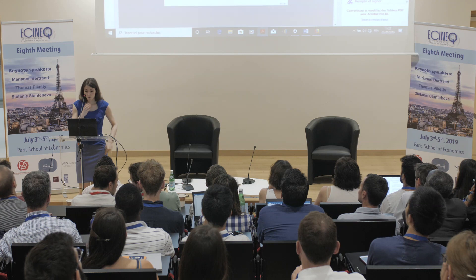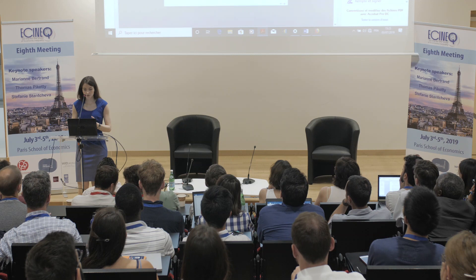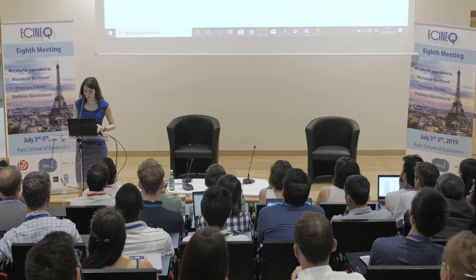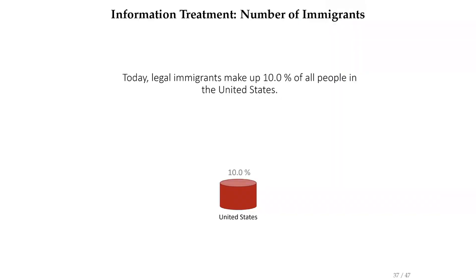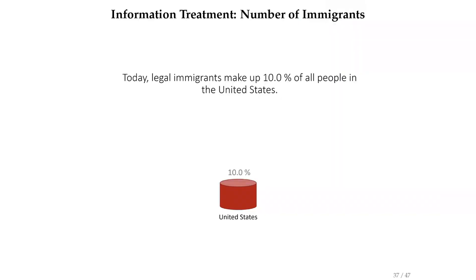The first information treatment is basically a video that people see, which will show them the actual number of immigrants in their country. The video goes through these images: today, what share of the population in the United States are legal immigrants? It will show them that legal immigrants make up 10% of all people in the United States.